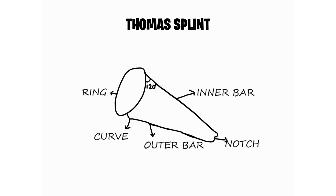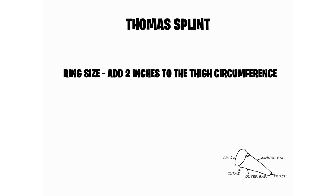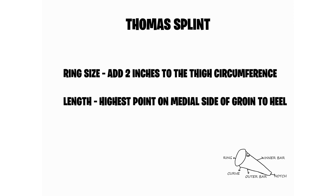Now let's see about the Thomas splint. In this picture, you can see the parts of the Thomas splint: we have a ring, an outer bar, and an inner bar. The outer bar has a curve in its upper part to accommodate the greater trochanter of the femur, as that part of the lower limb is a bit wide. The ring size of the Thomas splint is calculated by adding two inches to the thigh circumference of the patient. The length is calculated by measuring from the highest point on the medial side of the groin to the heel, then adding six inches.